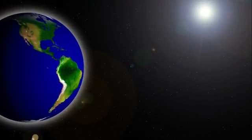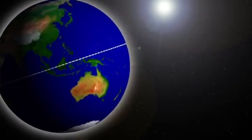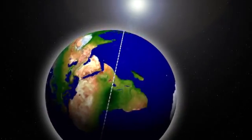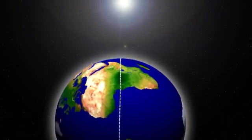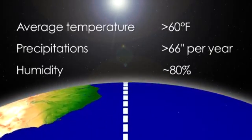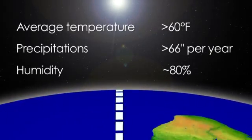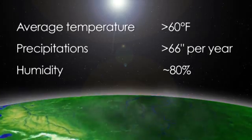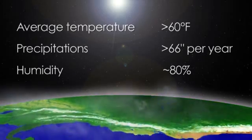Tropical rainforests are the most common kind of rainforest. Located near the Earth's equator, tropical rainforests rarely get below 60 degrees Fahrenheit, average over 66 inches of rain per year, and stay at about 80 percent humidity.